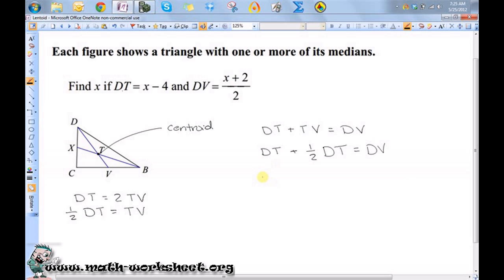So I know that DT is x minus 4 plus one-half of x minus 4 equals x plus 2 over 2.